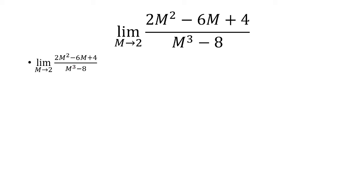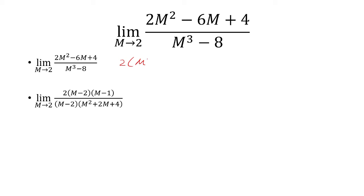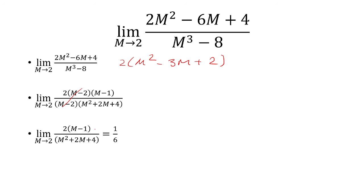This one: if I plug in m equals 2, I get 0 over 0, so I can factor the top. First, factor out a 2 from the top, and then that gets factored further as m minus 2 times m minus 1. The bottom is a difference of two cubes: m minus 2 times m squared plus 2m plus 4. The m minus 2s cancel, and we get 1 sixth as our answer.